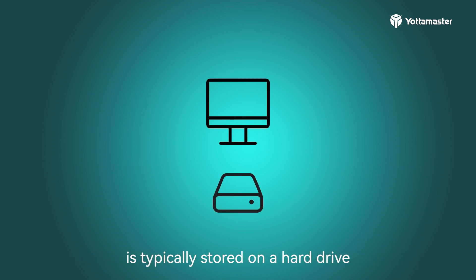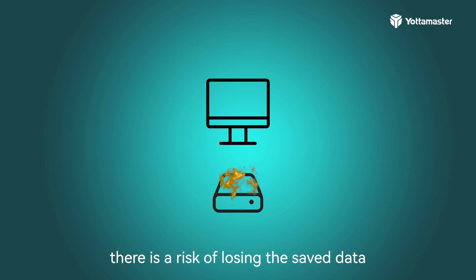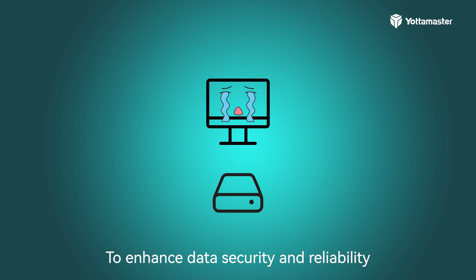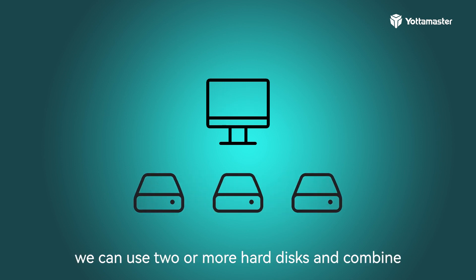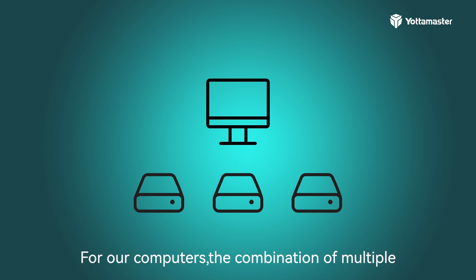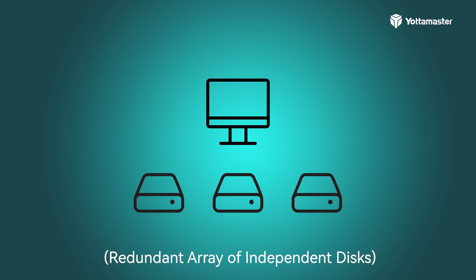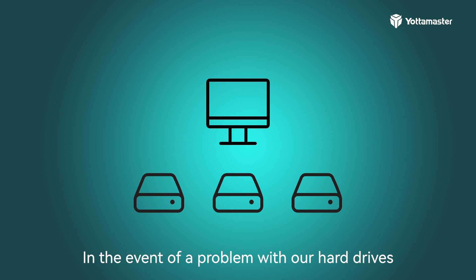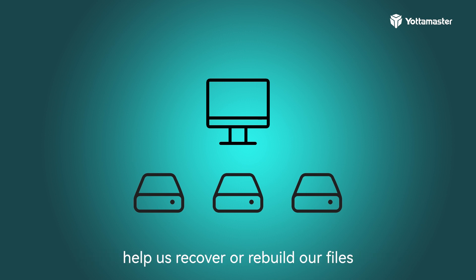All the data on our computers is typically stored on a hard drive, and if something happens to that drive, there is a risk of losing the saved data. To enhance data security and reliability, we can use two or more hard disks and combine them together to form a disk group. The combination of multiple hard disks into a logical unit is referred to as a RAID — Redundant Array of Independent Disks. In the event of a problem with our hard drives, the RAID array mode we have set up can help us recover or rebuild our files.